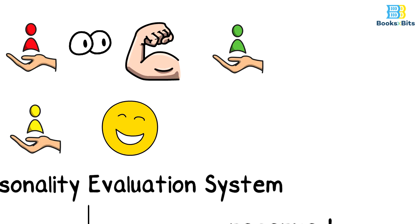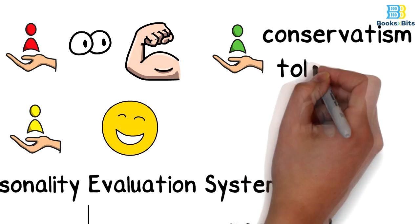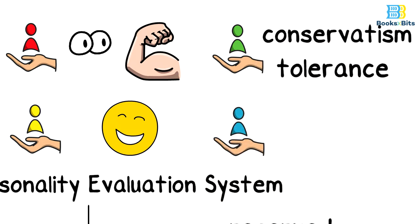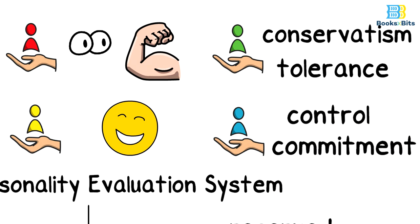As for the green person, it is enough to know him by his conservatism and tolerance. Blue is the symbol of control and commitment. The blue person only smiles when the situation demands. He is obsessed with analyzing everything.